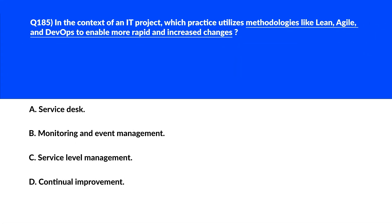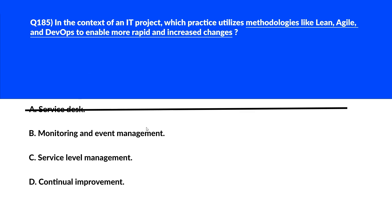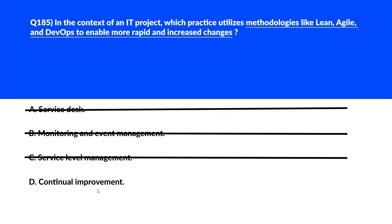Which practice utilizes methodologies like Lean, Agile, and DevOps to enable more rapid and increased changes? Option A says service desk — focused on managing user requests and incidents, not related — remove it. Option B says monitoring and event management — tracks and manages events, again wrong. Option C says service level management — ensures agreed-upon service quality levels are met, not what we're looking for. Option D says continual improvement. Continual improvement involves the use of approaches like Lean, Agile, and DevOps to facilitate faster and greater changes, enhancing efficiency and effectiveness. Option D is the right choice.